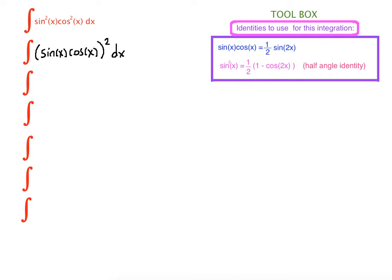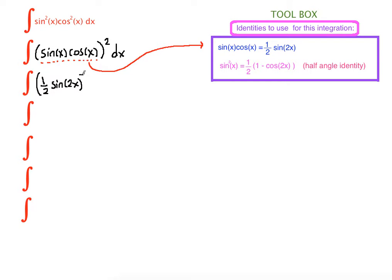Our next step is to use our first identity. Sine x times cosine x — let's go to the toolbox and substitute. Sine x times cosine x equals one half times sine of 2x. And we have that squared, dx.